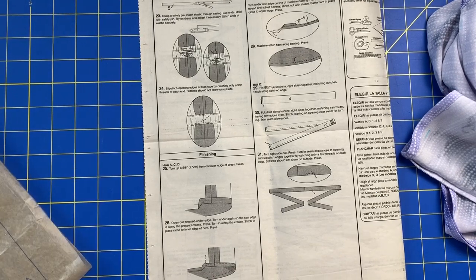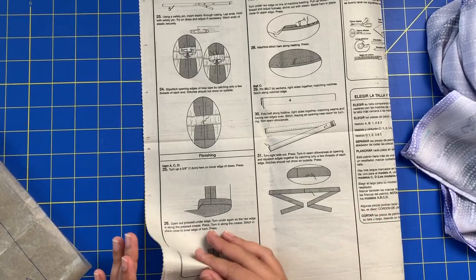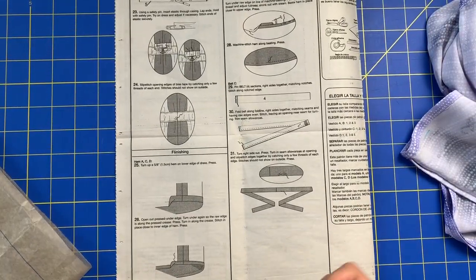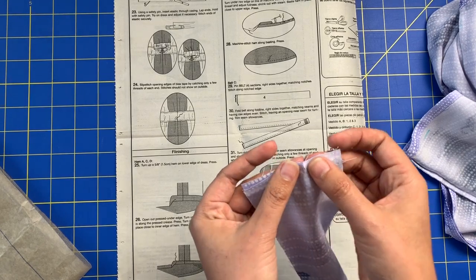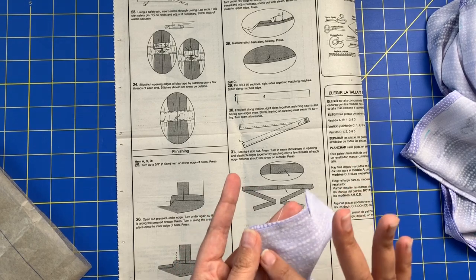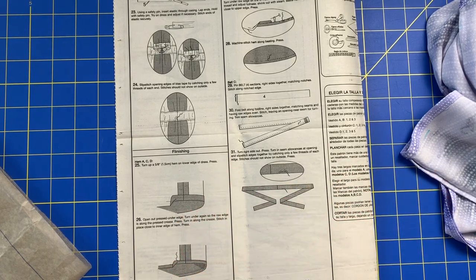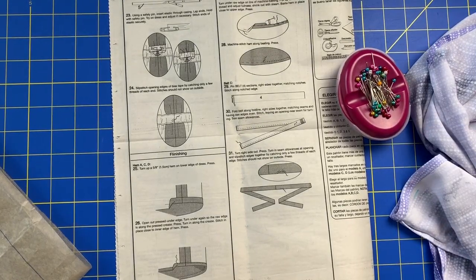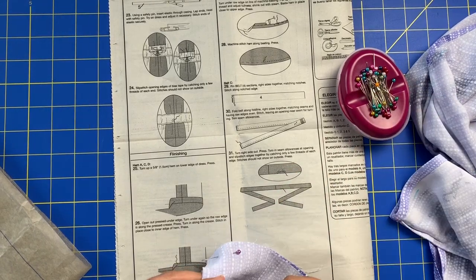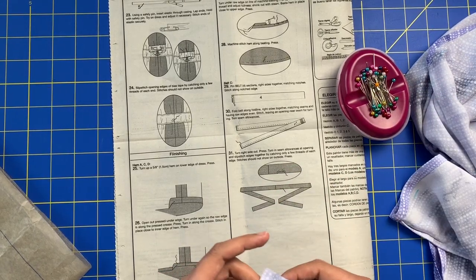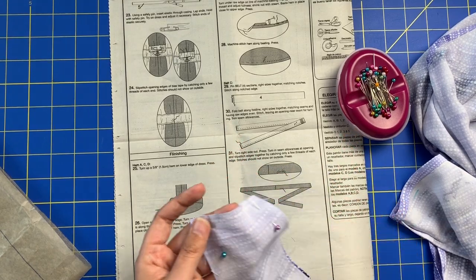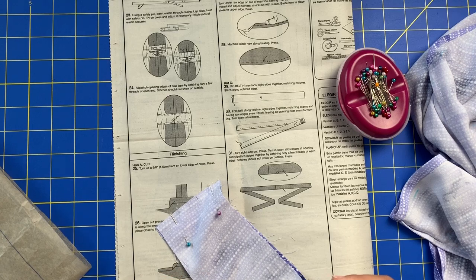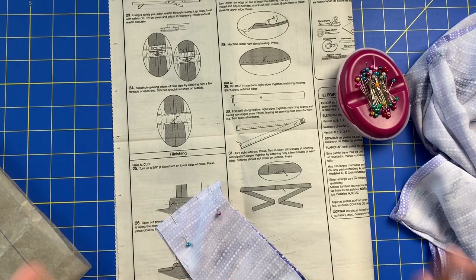Okay so the belt is going to be constructed the exact same way as the drawstring from step 16. It is literally the exact same steps. We are going to find the end that has the notch on it and we are going to sew this at five eighths inch of a seam allowance. So five eighths inch hem across here and then we'll press this guy open and flat and then we will have one long strip. Then I will meet you guys at the ironing board because we are going to be pressing a fold into this before we stitch it closed just like the drawstring.